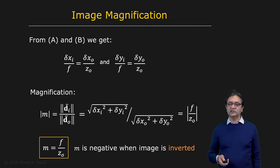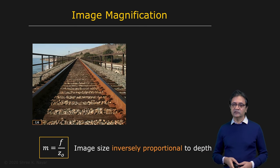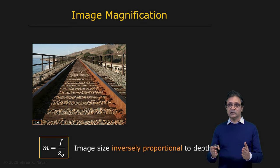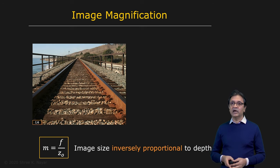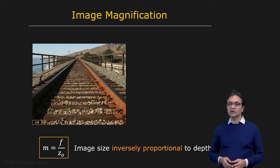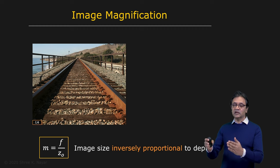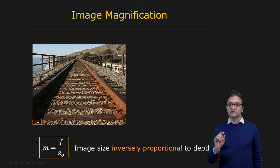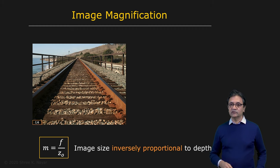Now let's look at some manifestations of image magnification. Here you see train tracks — two parallel tracks. We know these lines are parallel in 3D, and yet in the image they appear to be intersecting or meeting at infinity. As you go further away in depth, the two lines get closer and closer together. This is because magnification is inversely proportional to distance — Z0, the depth.